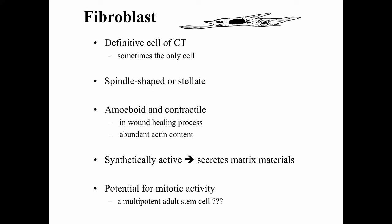The first cell we'll consider is the fibroblast, considered the definitive cell of connective tissue. It's often the only cell seen in certain types of connective tissue, especially dense regular connective tissue. Fibroblasts are often spindle-shaped or stellate-shaped. They can be amoeboid, moving around within connective tissue, and they can be contractile because they have abundant actin content in the cytoplasm. Fibroblasts play an important role in wound healing and are synthetically active, secreting the majority of extracellular matrix material.